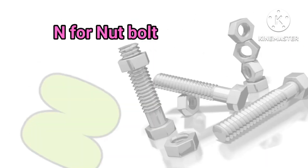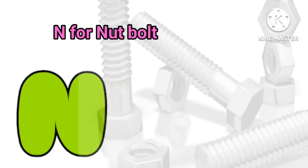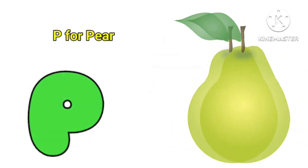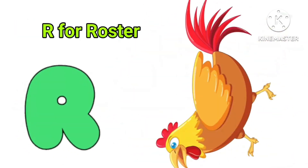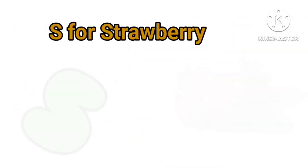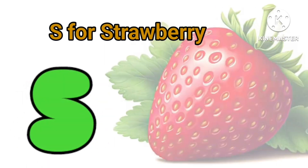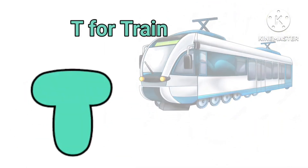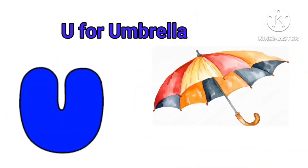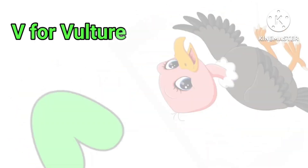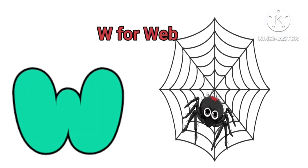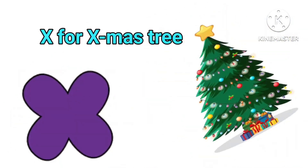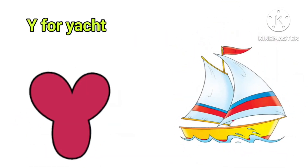N for Nut Bolt, O for Otter, P for Pear, Q for Quad Bike, R for Roaster, S for Strawberry, T for Train, U for Umbrella, V for Vulture, W for Web, X for X Mastery, Y for Yacht.